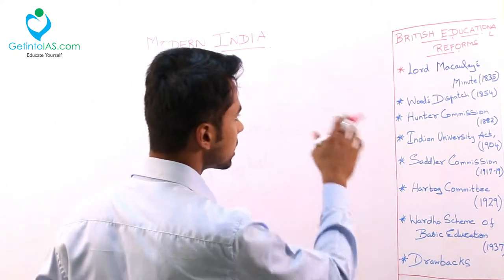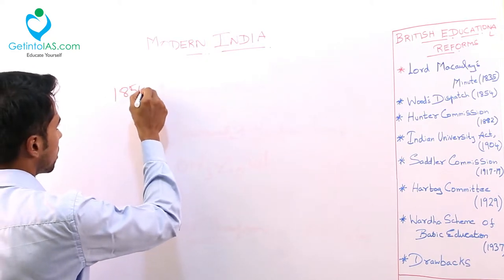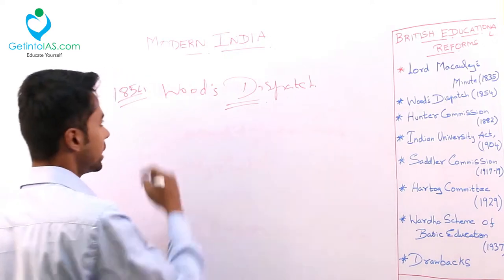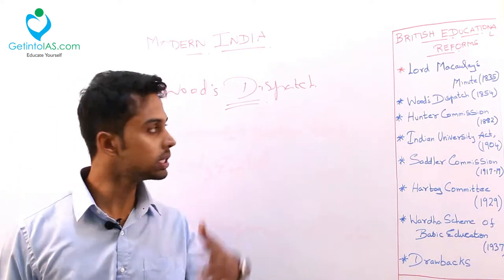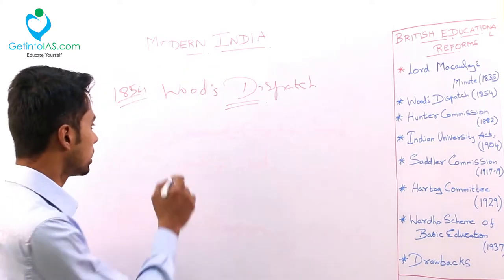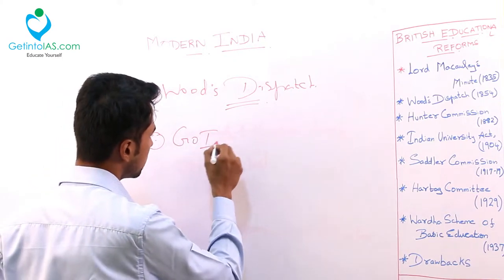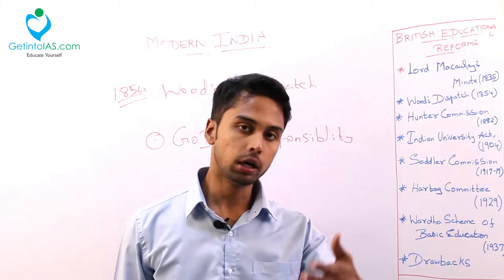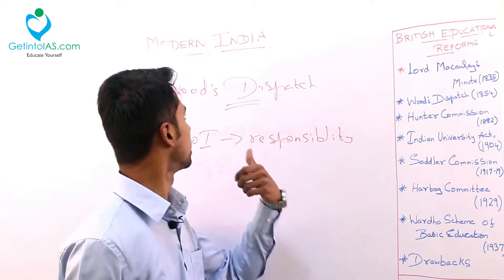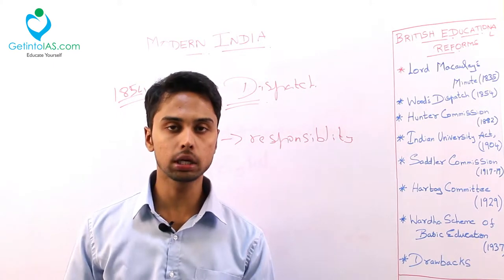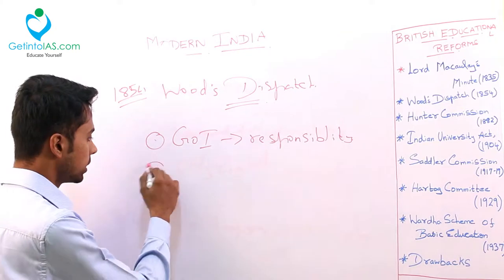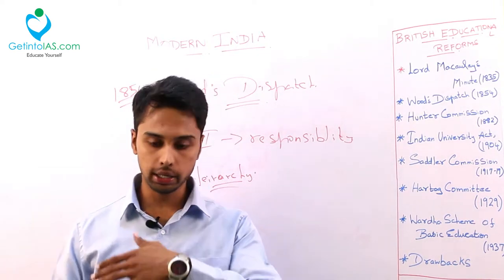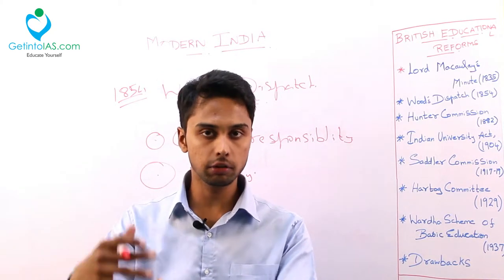Next we are going to the next reform of Wood's Dispatch in the year 1854. This is very famous and it has been described as the Magna Carta of India. The main recommendation is that the Government of India should take the responsibility for educating the Indian masses - a transfer of responsibility from the British government. He also introduced a hierarchy: primary school, secondary, then college, then university.